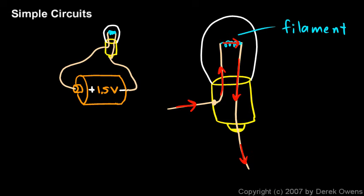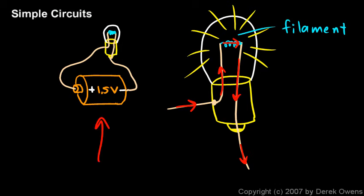As electrons go through the filament, they bump into the atoms in the filament and cause them to shake. Remember, heat is simply the vibration of atoms — so when electrons bump into the atoms in the filament and make them shake, it heats them up. It gets really, really hot, so hot that it glows and produces light. That's how the bulb shines because of the electric current. This is an example of a simple electrical circuit.